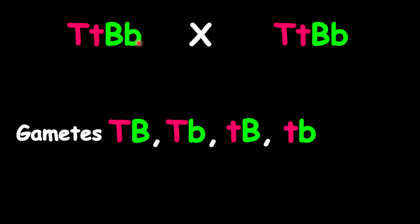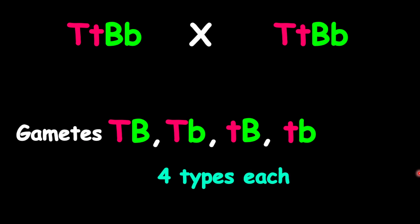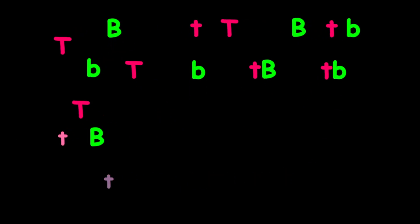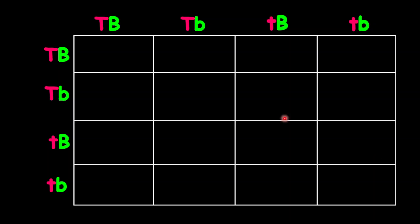Since both parents are the same genotype, the possible gametes are the same for both parents. We have four types of gametes possible for each parent. Since we have a four and four, there's a four-by-four Punnett Square, which is 16 boxes. To fill out each box, we're going to go row by column. Our focus is really on the number of gametes and the possible size of our Punnett Square.